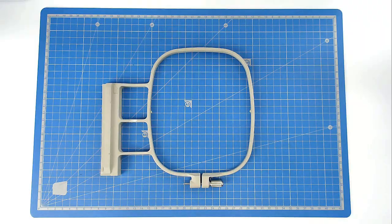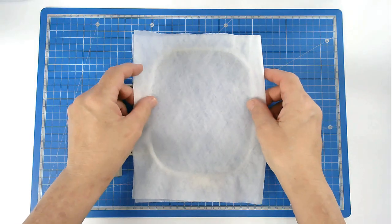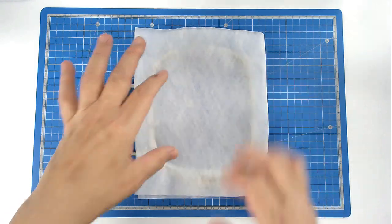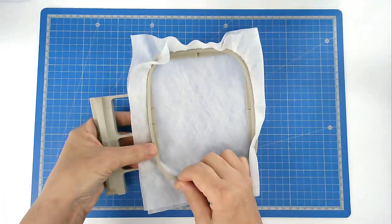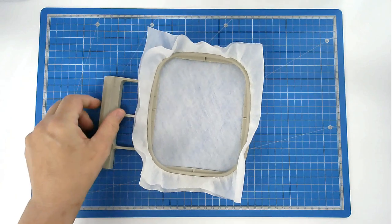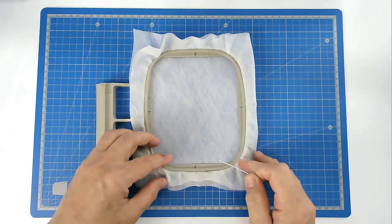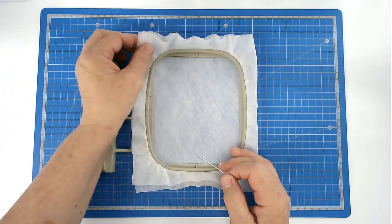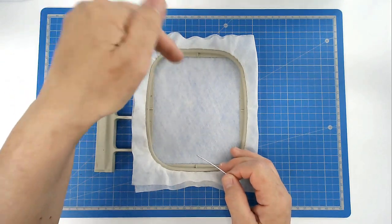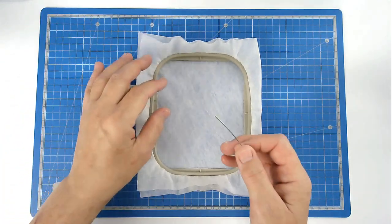You're going to start by hooping your two layers of wash away stabilizer, and then we're going to pin around the top edge of the hoop. That will stop our stabilizer from going slack because it's being pulled down between the two frame parts.